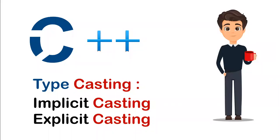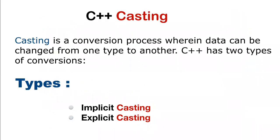Welcome back to another video. In this video we will cover C++ type casting. Casting is a conversion process in which we convert a data type into another data type, whether it is a primitive data type or a concrete data type. There are two types of casting in C++: first is implicit casting and second is explicit casting.